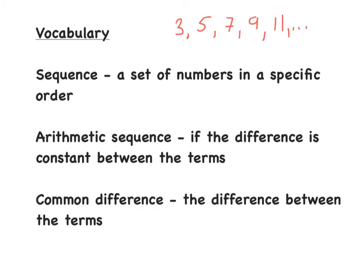So we have some vocabulary today. The first one is called a sequence — it's basically a set of numbers in a specific order. For example, this is a sequence: it goes 3, 5, 7, 9, 11.